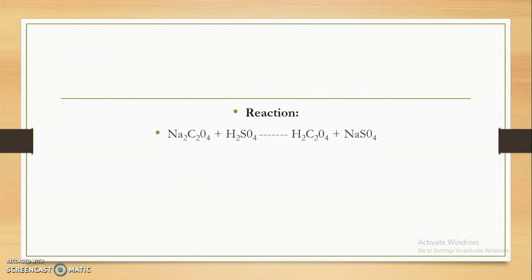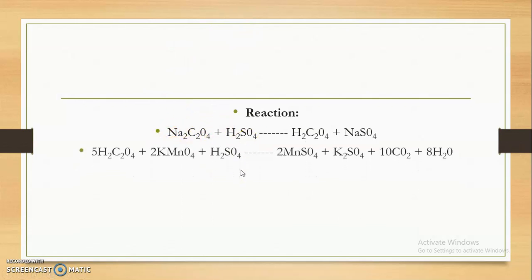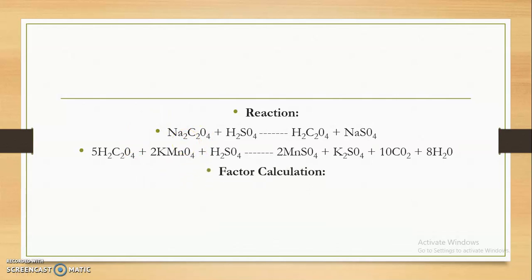The reaction involved: sodium oxalate first reacts with H2SO4 to give oxalic acid — that is why we add H2SO4, to convert sodium oxalate into oxalic acid. Then 5 moles of oxalic acid react with 2 moles of Potassium Permanganate to give manganese sulphate. So 2 moles of KMnO4 are equivalent to 5 moles of sodium oxalate — this is important for factor calculation.